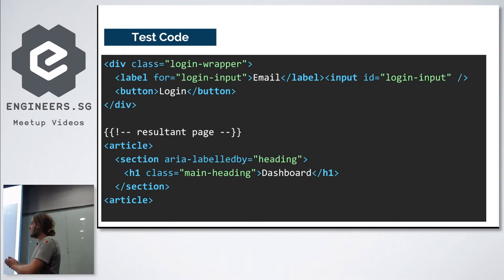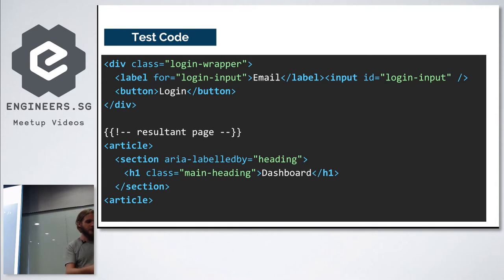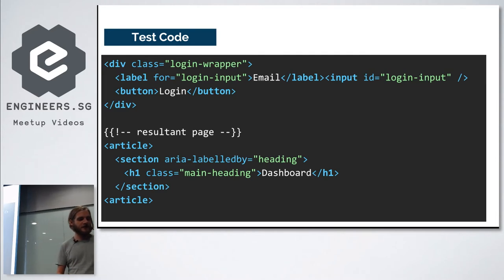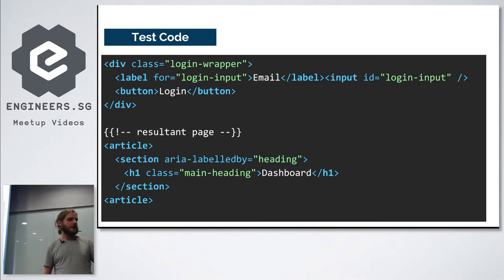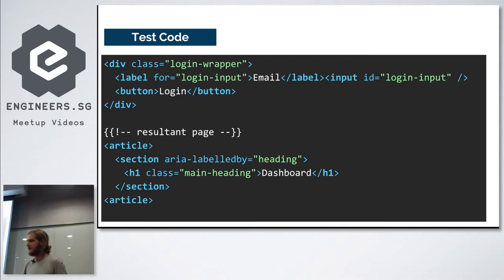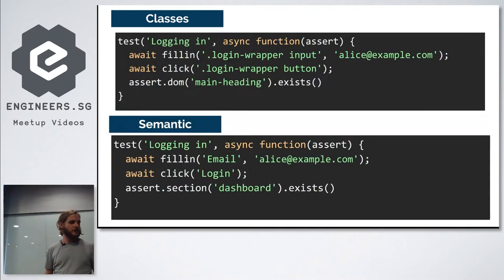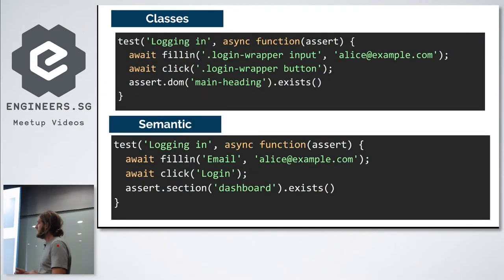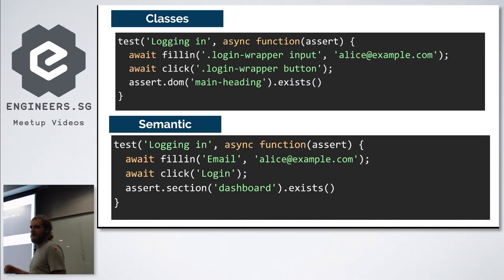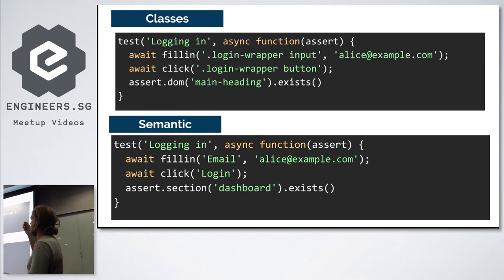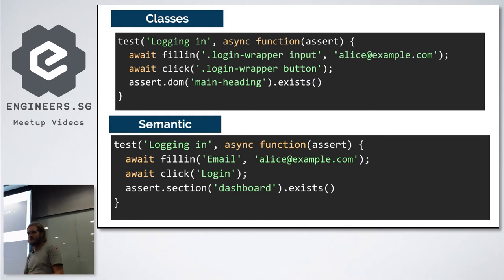Consider this code example: a login wrapper with a label targeting a login input labeled 'email,' and a login button that transitions to a second page. The way you'd write the test with CSS classes is: fill in '.login-wrapper input' with a value, click a button, and then assert that the correct CSS is on the page to confirm the transition succeeded.